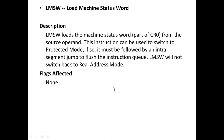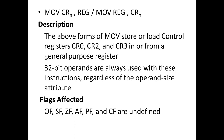The MOV instruction forms that store or load control registers CR0, CR2, and CR3 move data into or from a general-purpose register. These move instructions can load the control registers into general-purpose registers or extract control register contents. A 32-bit operand is always used regardless of the operand size attribute. The flags affected are: overflow flag, sign flag, zero flag, auxiliary carry flag, parity flag, and carry flag.